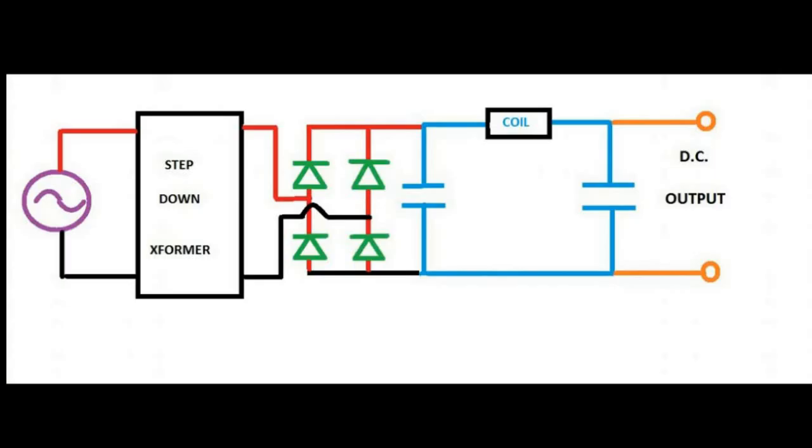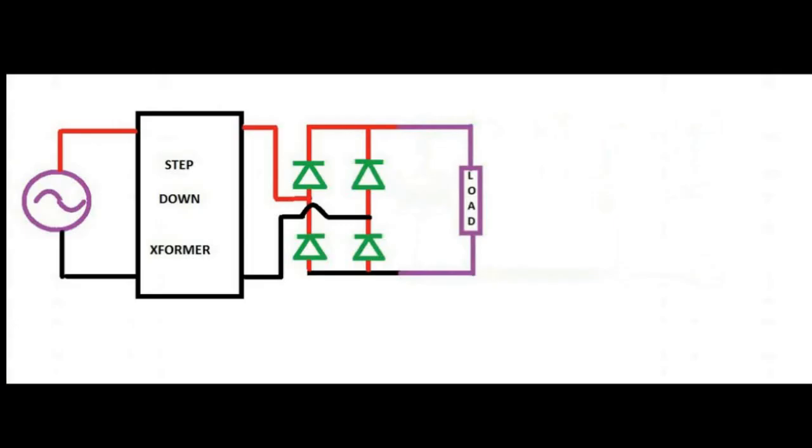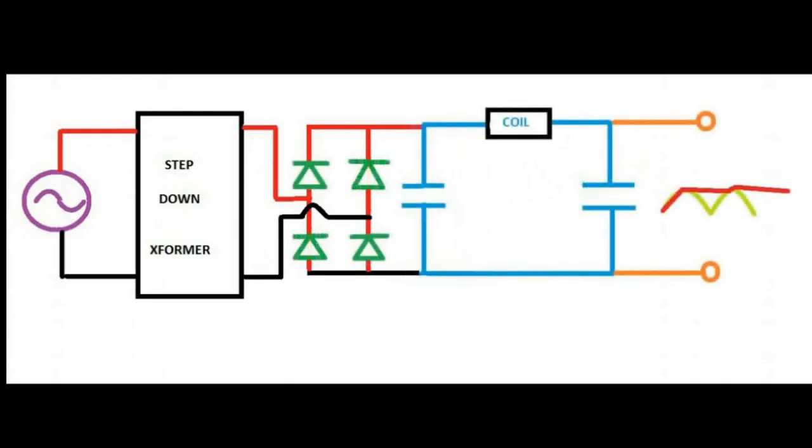So to understand a full wave bridge rectifier, let us forget the filter circuit and assume that there is only a load attached to it. During the positive and the negative half cycle, only two of the diodes act as a short circuit and two act as an open circuit. Note that the upper part of the load is always connected to the positive cable of the supply. And this is how a bridge rectifier works. And the filter just removes the ripples.